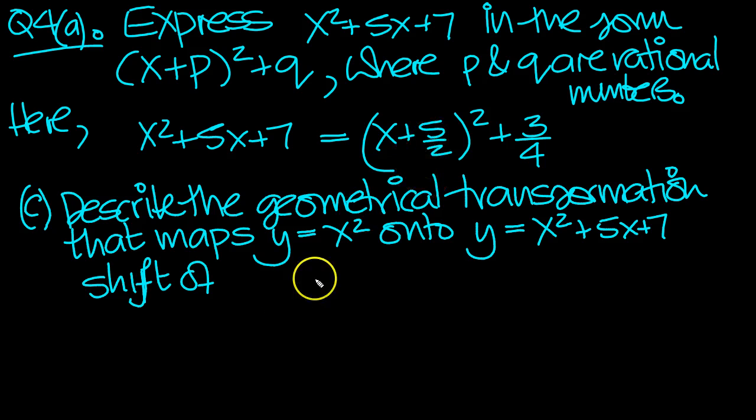We need to shift it back 5 over 2 in the x direction, and then move it in the y direction upwards by 3 quarters. So that's the transformation vector.